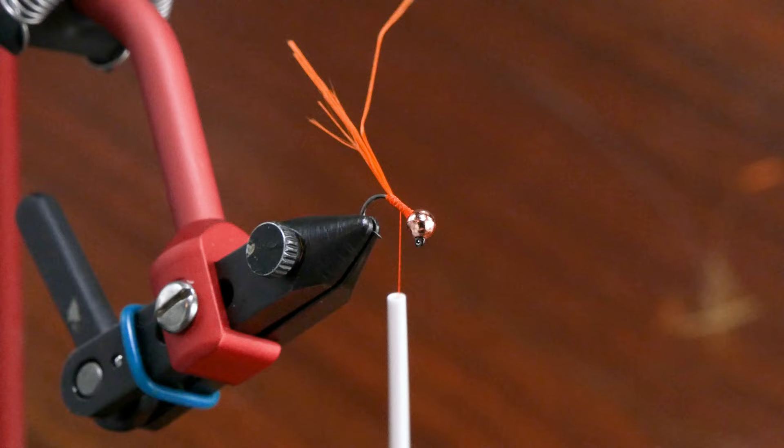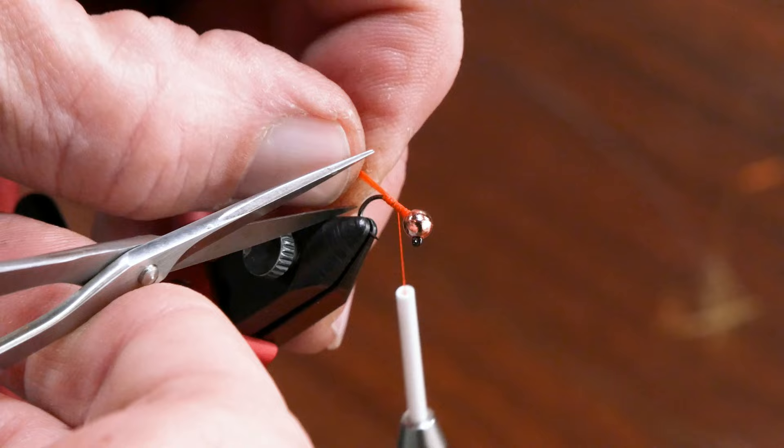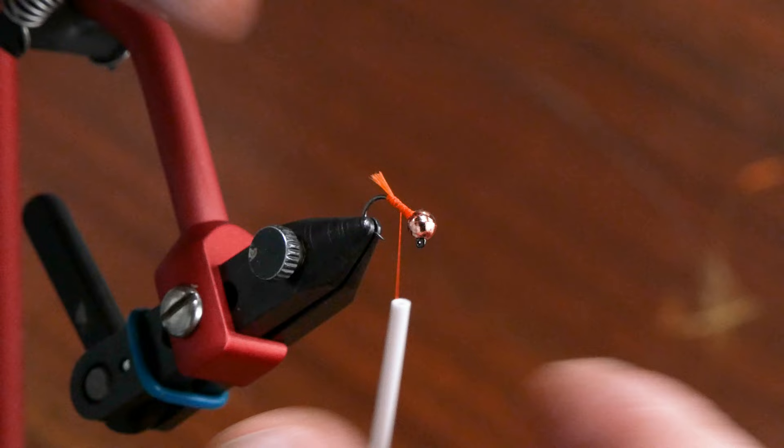So we're going to tie in four strands of the No. 5 Glowbrite. This is not a long tail, it's a tag nymph. So we're going at probably that four to five mil zone. Anything longer will definitely be visually too long. You'll know.